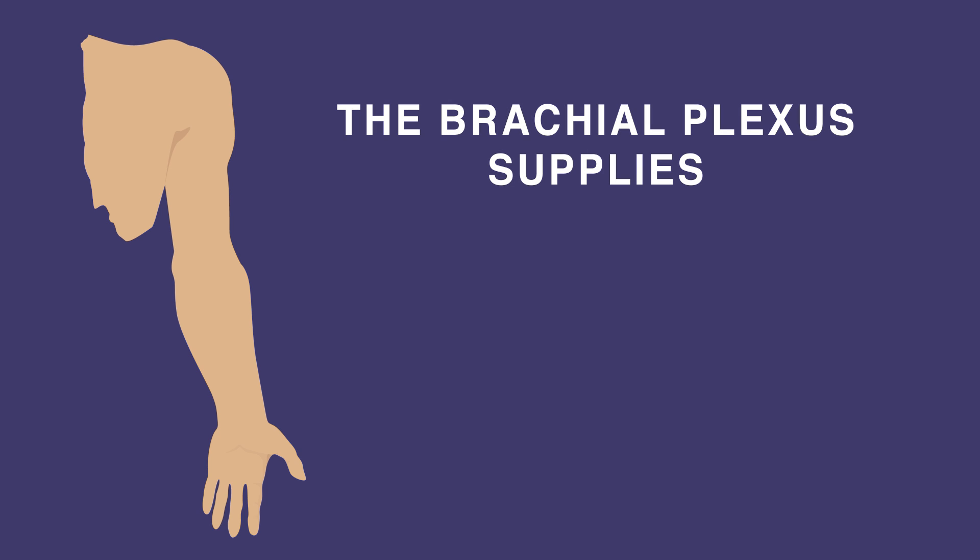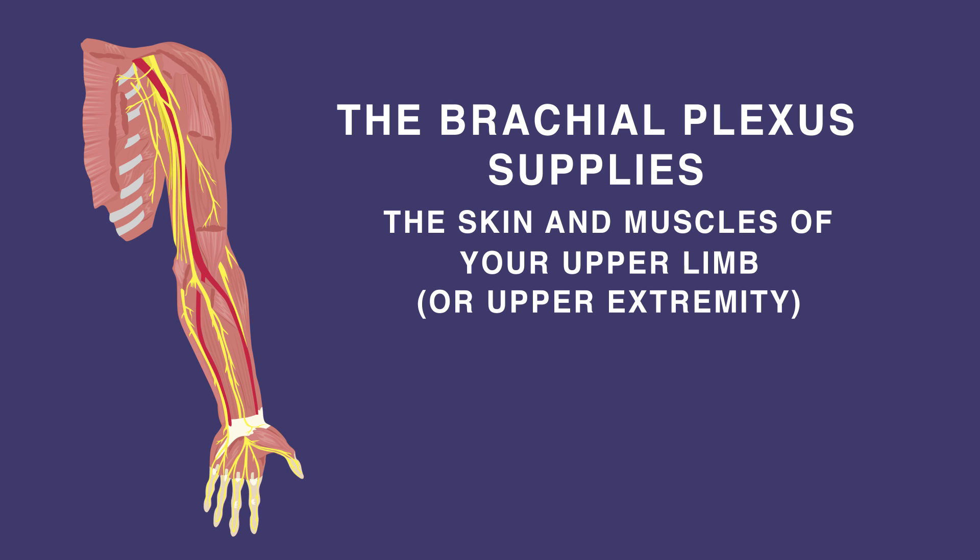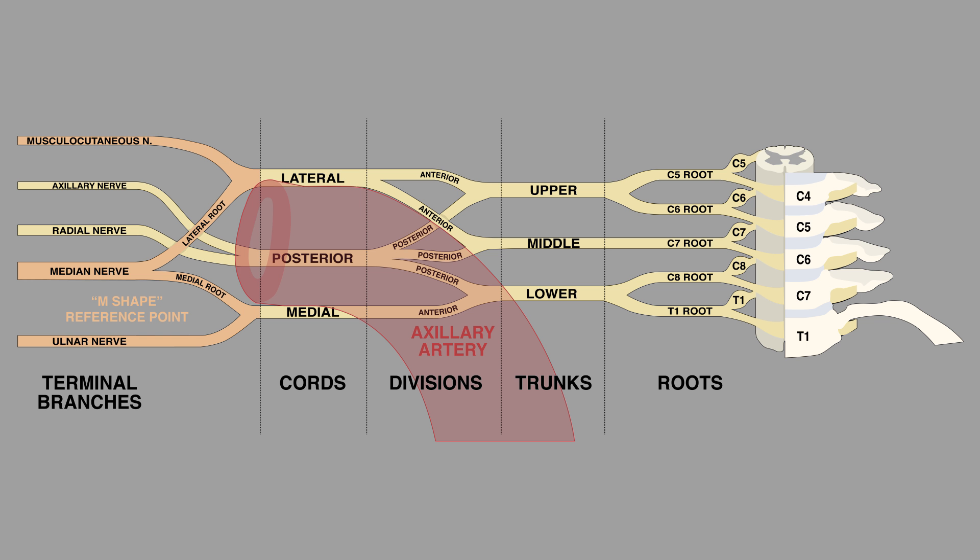The brachial plexus supplies the skin and muscles of your upper limb, or upper extremity, which includes your shoulder, arm, and hand. The brachial plexus can be divided into several sections: roots, trunks, divisions, cords, and terminal branches.